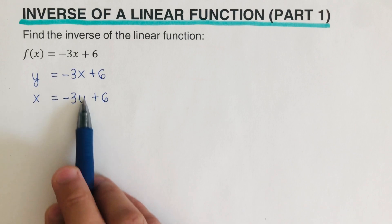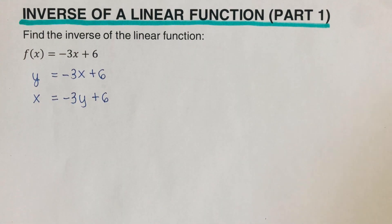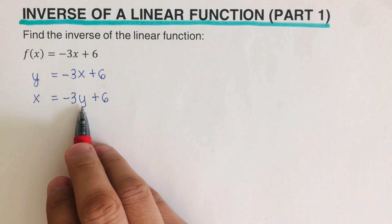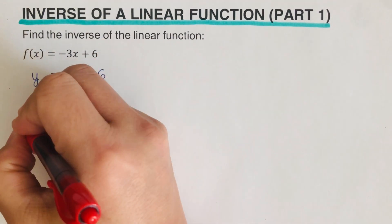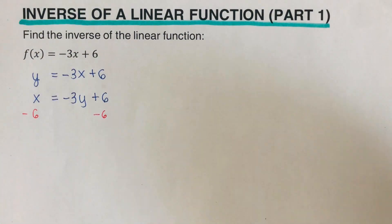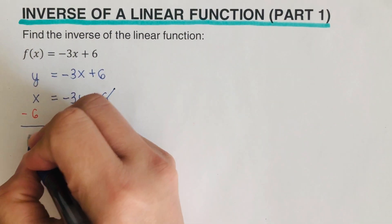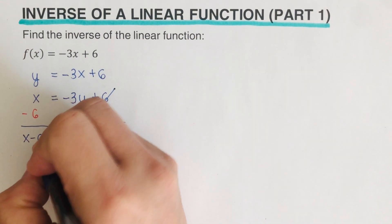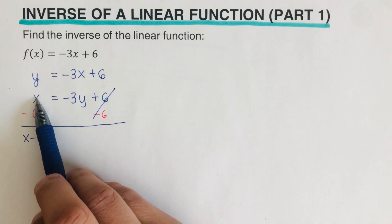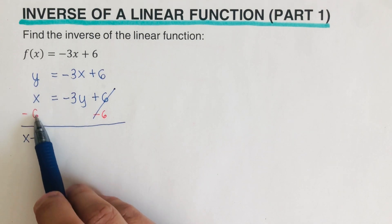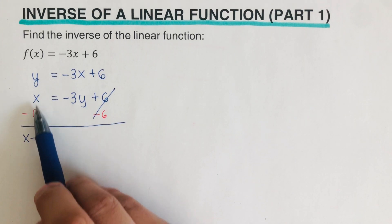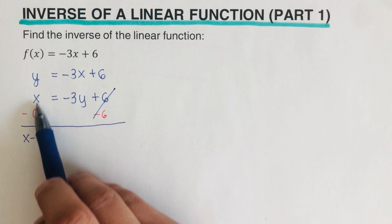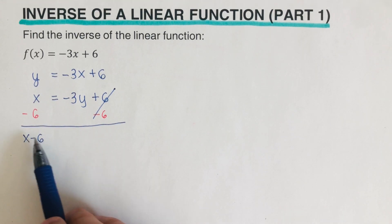Part of this step is to solve for y, so we isolate y by itself. We subtract 6 from both sides, giving us x - 6 = -3y. Just a reminder: x - 6 cannot be combined into -5x because these are unlike terms — we keep them as two separate terms: x minus 6.